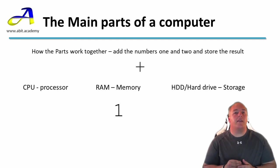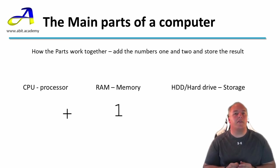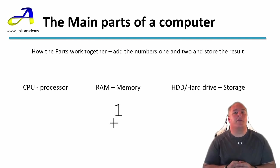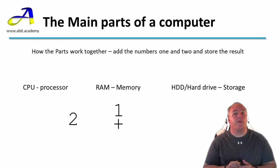Now we enter the plus symbol. Again, as soon as you press the key, this action goes through the CPU. The CPU still doesn't know what you're doing, so it moves the symbol into RAM. Now I enter the second number, 2. As before, it goes through the CPU, which moves it into RAM and waits for the next action.